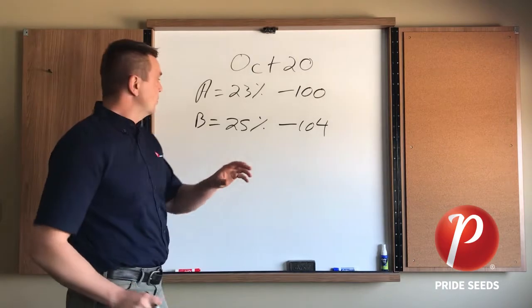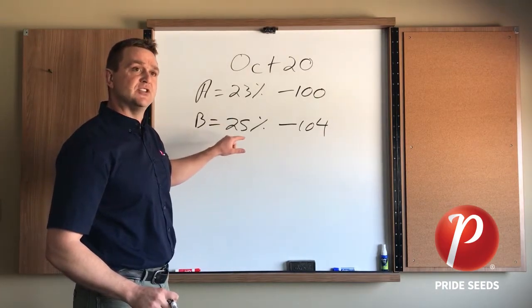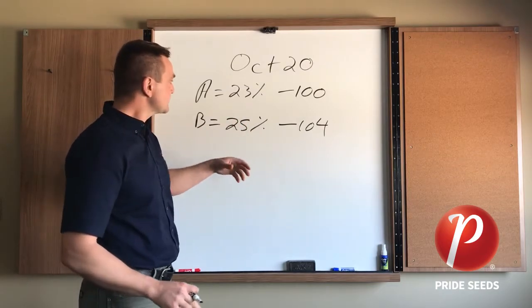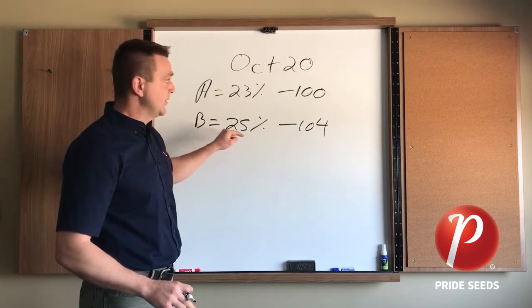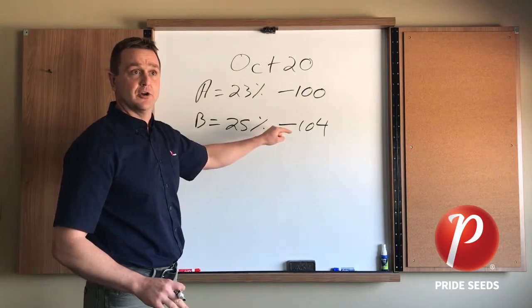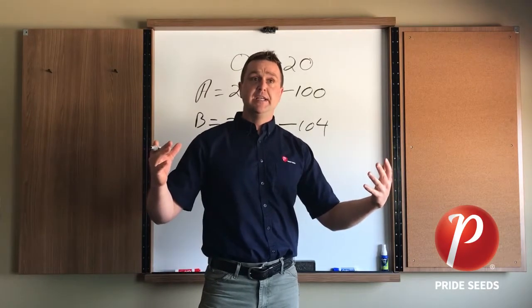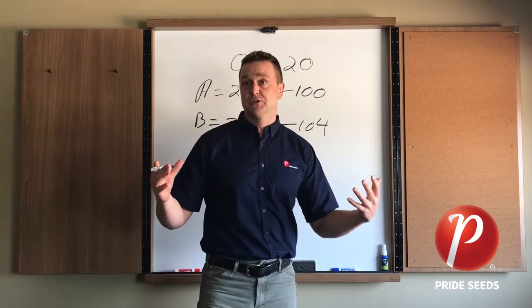And why is that? Well, because it's 2% wetter, the assumption is that corn is drying down at half a point per day after black layer and so because it's 2% wetter, it is ultimately four days longer. And so quite simply, that's relative maturity. It's how does one hybrid compare to another in terms of moisture at harvest time.